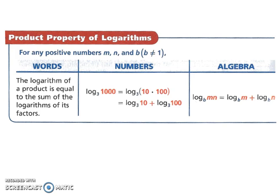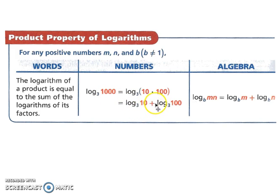Let's start with the product property of logarithms. It's similar to when you're multiplying like bases with exponents. The logarithm of a product is equal to the sum of the logarithms of its factors. For example, log base 3 of 1,000 — since 10 times 100 make up two factors of 1,000, log base 3 of 10 plus log base 3 of 100 is the same as log base 3 of 1,000.